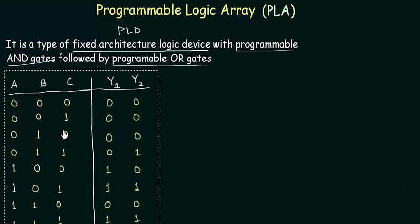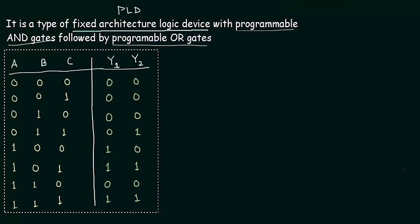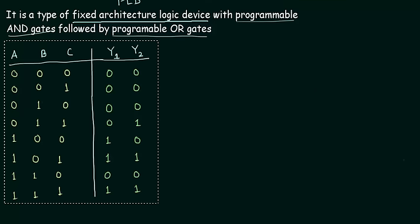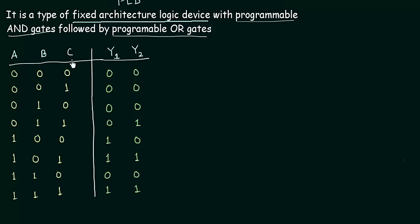This is the truth table which we are going to implement as the PLA. So the first step is to make the truth table, which we have already made. The second step is to find out the minimal SOP form for the given functions. The functions here are Y1 and Y2. So we have to find the minimal SOP form for Y1 and the minimal SOP form for Y2.